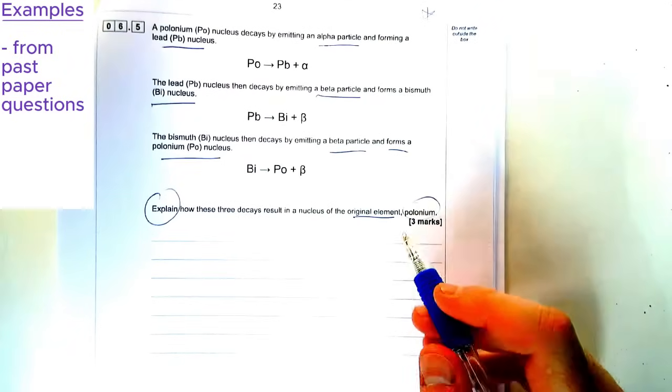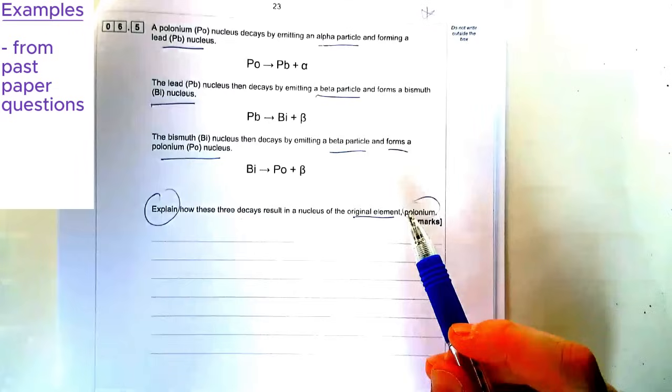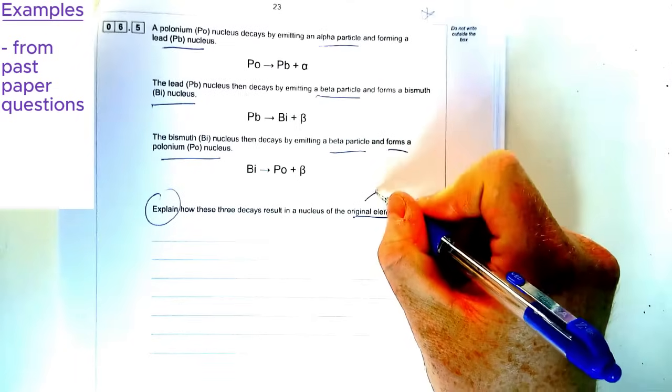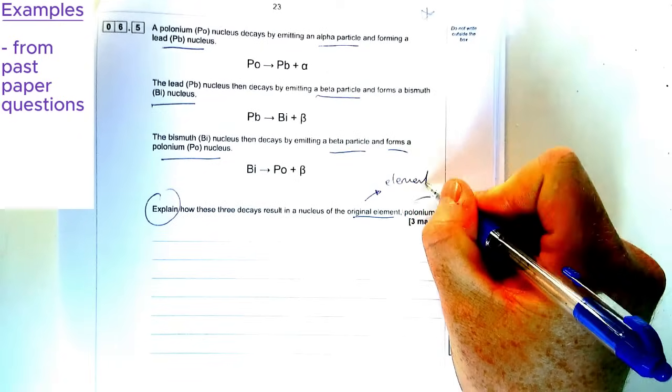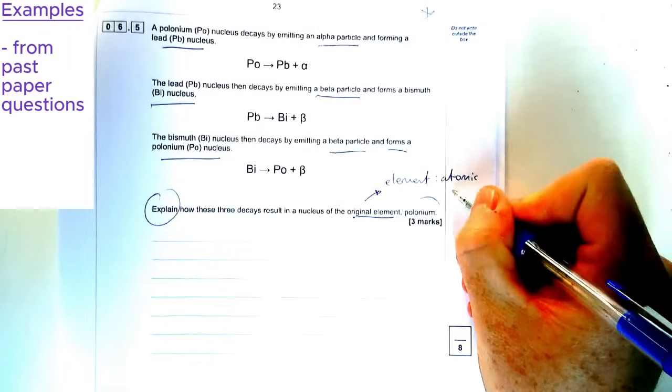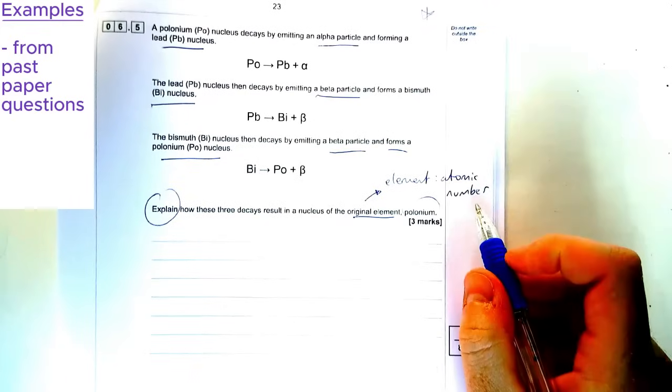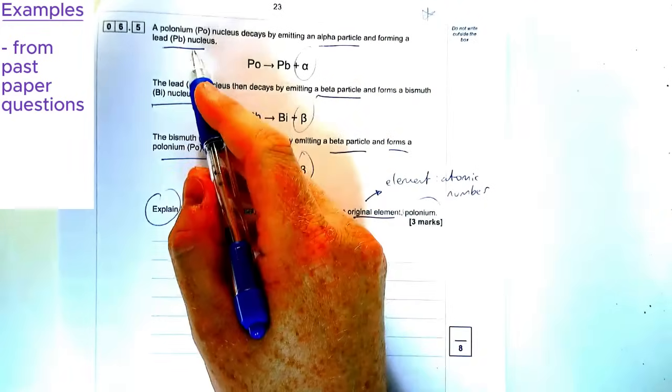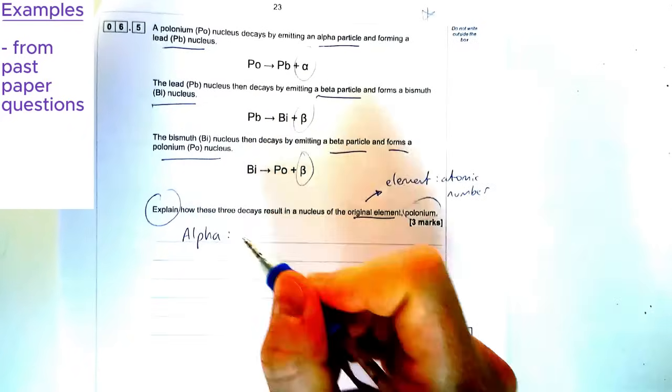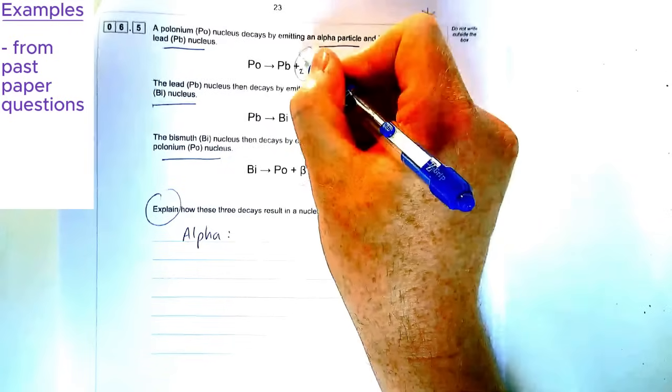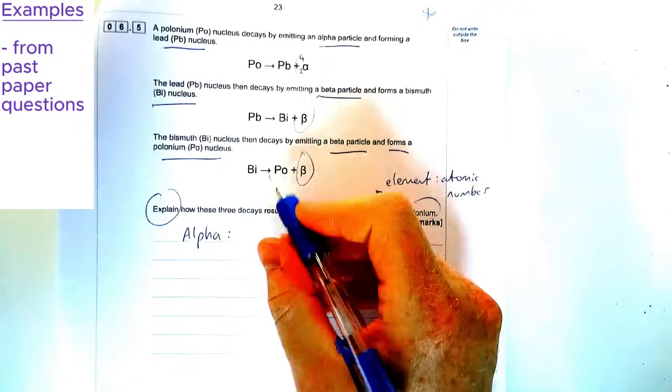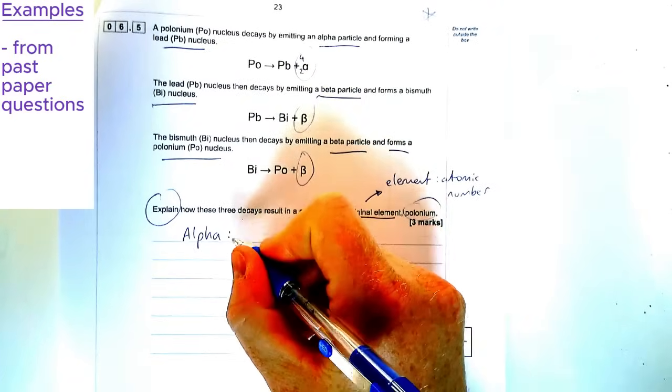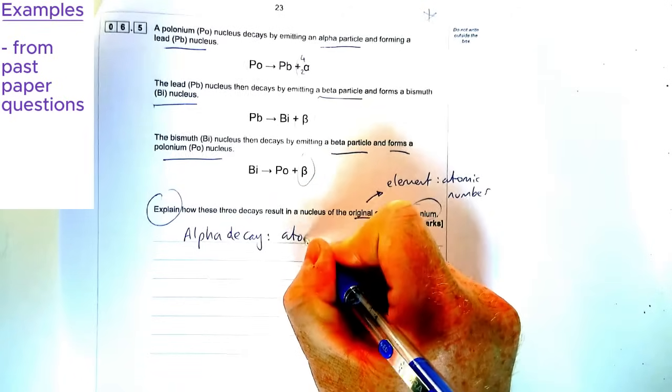To be able to answer this question for three marks, you can get marks in this question just for saying basic things about each decay. Now for the original element we should know that an element is defined by its atomic number. So each element has a different atomic number, you'll know that from chemistry from the periodic table. So with that in mind, let's then talk about for each of these three decays what happens to the atomic number. Now the first one it tells us is alpha. So we should know alpha decay, if we know the atomic number and mass number of an alpha particle, we know the atomic number is two. So that these numbers here, from polonium to lead in this example, the atomic number will go down by two. So for alpha decay, therefore the atomic number decreases by two.